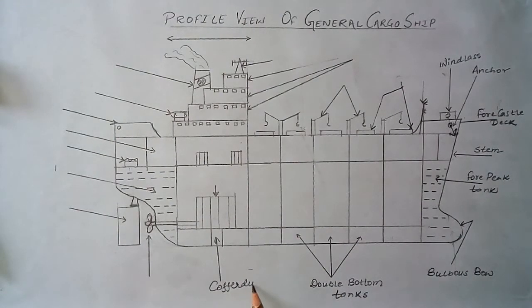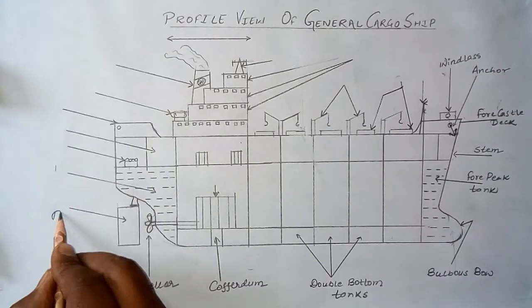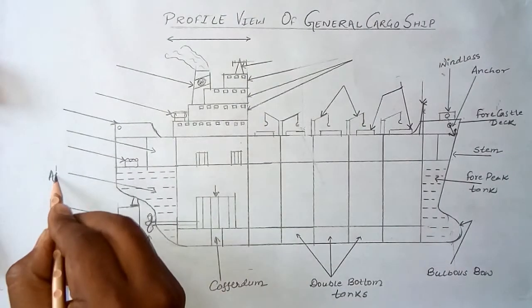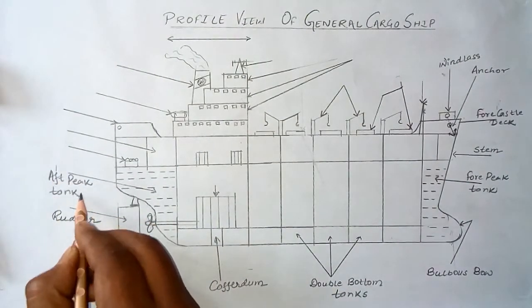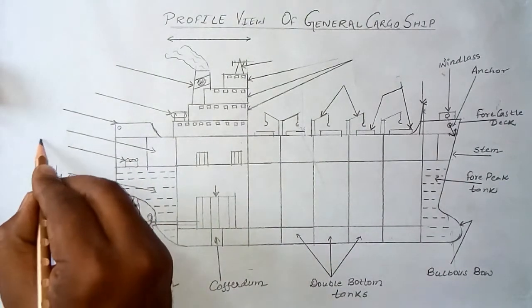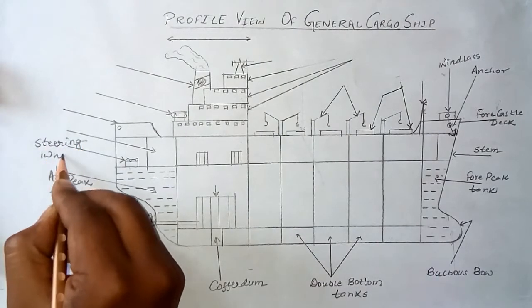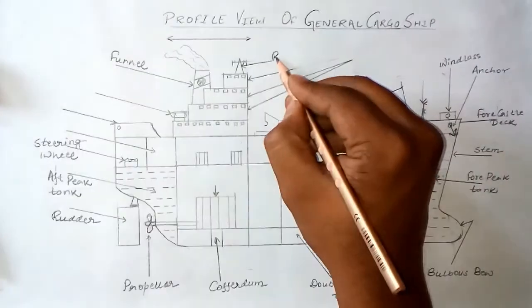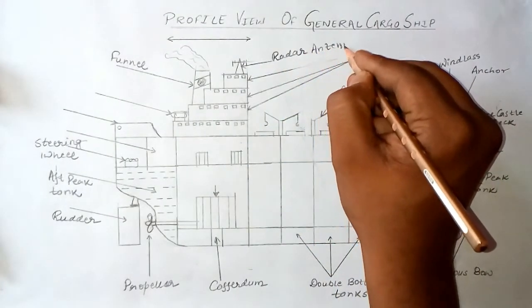Continuing the labeling: the cofferdam, the propeller, the rudder, the aft peak tank used for ballasting, the steering gear used for maneuvering of the ship, the funnel, and the radar antenna.